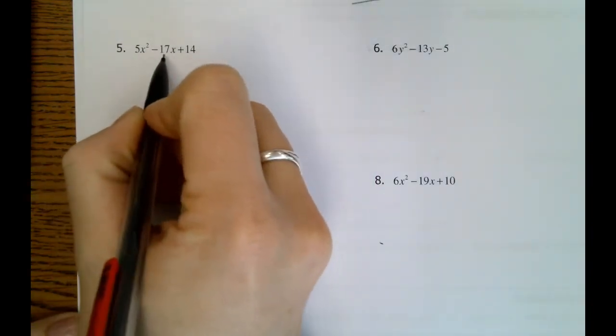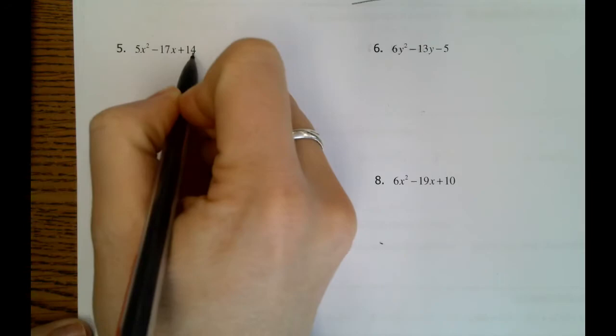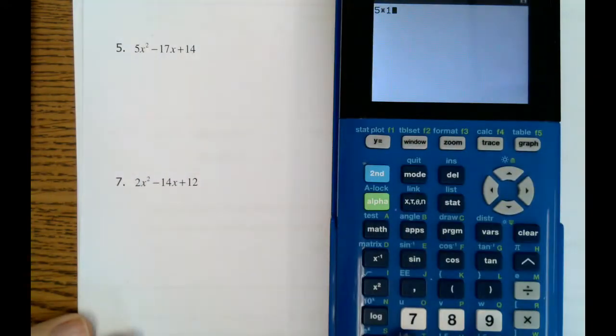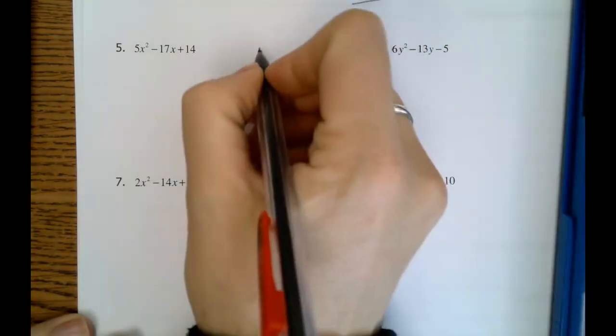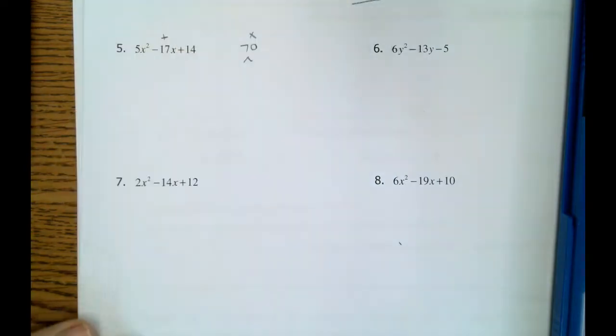So right here we have 5, 17, and 14. Those do not have a GCF, so we're ready to roll. We'll do 5 times 14. That gets us 70. So we know that we're going to be multiplying to 70 and adding to 17.